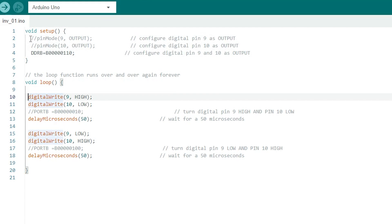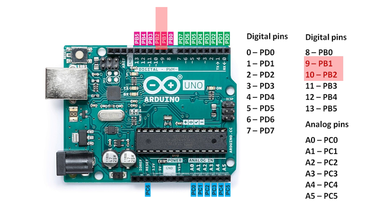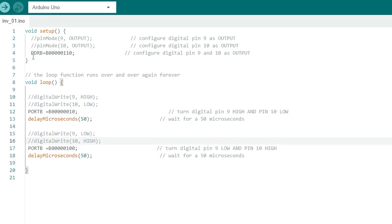We can also use register-level coding for better and accurate output waveforms. Digital pins 9 and 10 are the Arduino Port B pins PB1 and PB2. So firstly, we set PB1 and PB2 pins as output. This statement makes digital pin 9 as high and digital pin 10 as low.